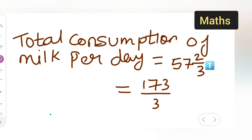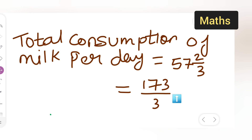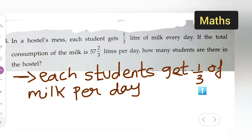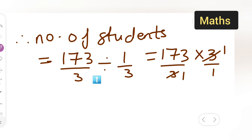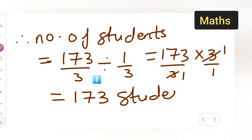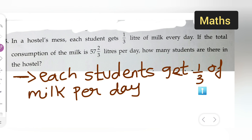Therefore, the total number of students equals the total consumption divided by consumption per student: 173/3 divided by 1/3. Dividing by a fraction means multiplying by its reciprocal, so 173/3 multiplied by 3/1. The 3s cancel out, giving us 173. So the answer is 173 students.